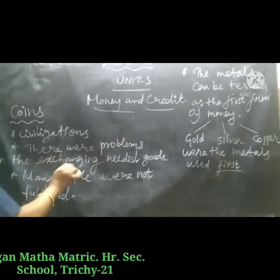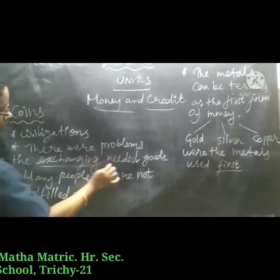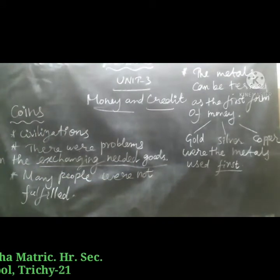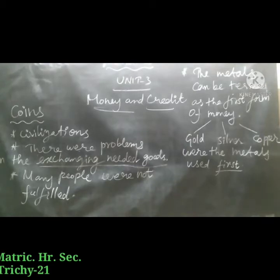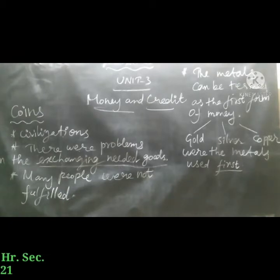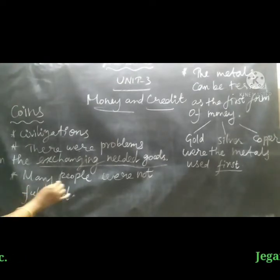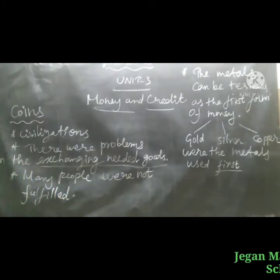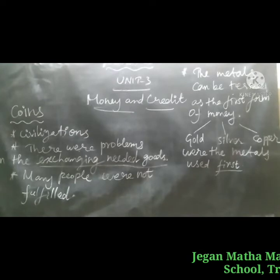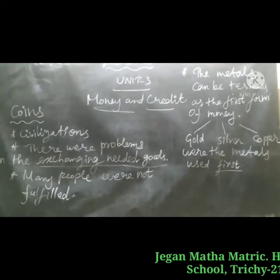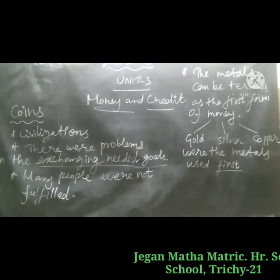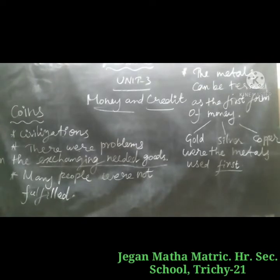There were problems in exchanging the needed goods. For instance, a person who had paddy needed earthenware, but the person who had pots and other utensils did not need paddy. The needs of many people were not fulfilled. Measuring the quantity and value of goods exchanged was also very difficult. To solve these issues, they fixed a common item with a standard value for the effective exchange of goods. Hence, metals can be termed as the first form of money.